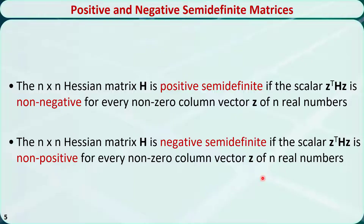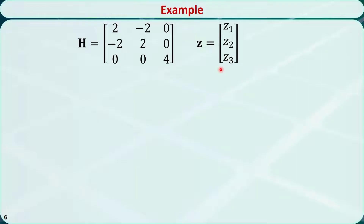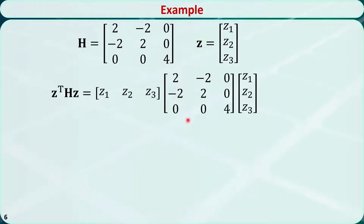This explanation still seems complex and difficult to understand, so let's try an example. This is the Hessian we got from the previous example. We will determine whether it is positive semi-definite or negative semi-definite. Let's define a nonzero column vector Z containing three numbers: Z1, Z2, and Z3. For the matrix multiplication, we can expand it in this form.